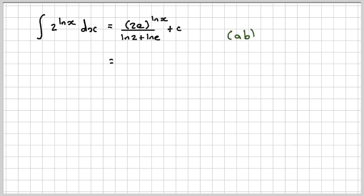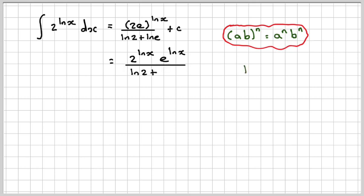So now we use the idea that (ab) to the n equals a to the n times b to the n. We apply that here: 2 to the ln x times e to the ln x. We've just applied that rule where n is ln x, over ln 2.